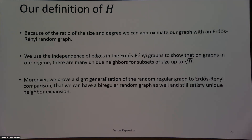Generally, the way we do this is: because I have this nice ratio between number of vertices and degree, I can approximate my graph with an error-friendly graph — specifically a graph with independent edges. Once we get to independence, our life becomes much easier. We show that because of the independence of these edges, there are many unique neighbors for subsets of size √D.